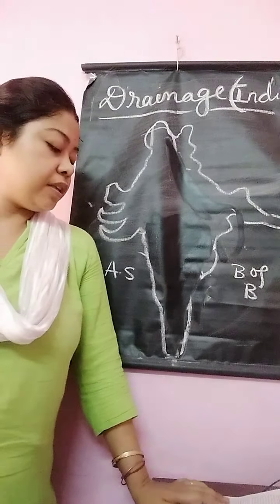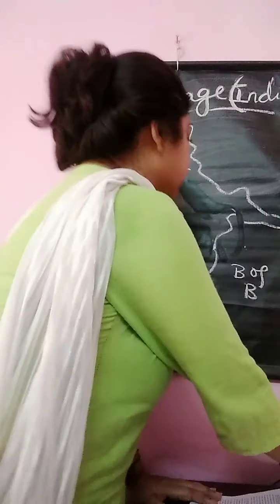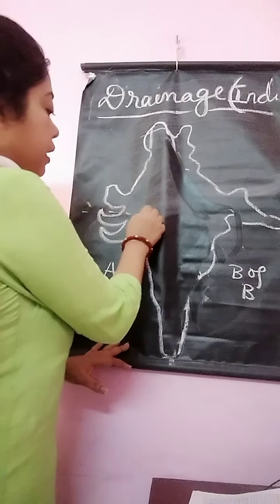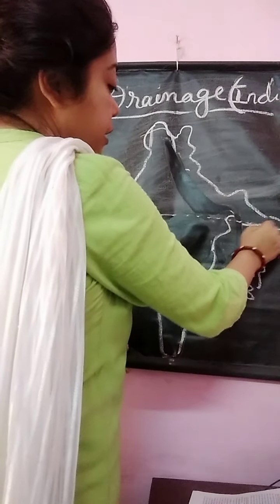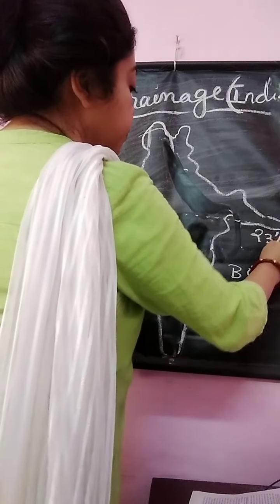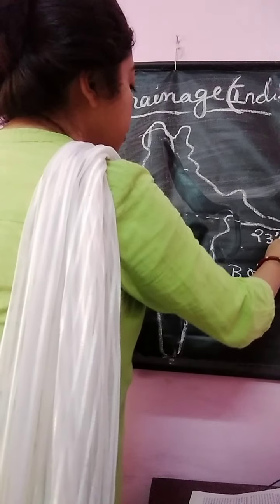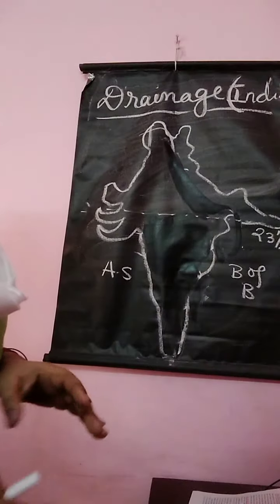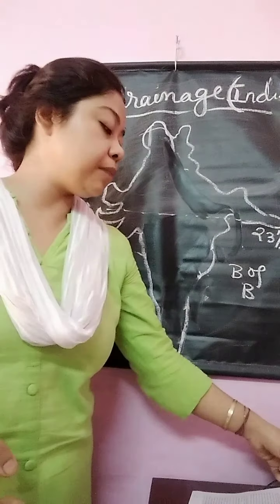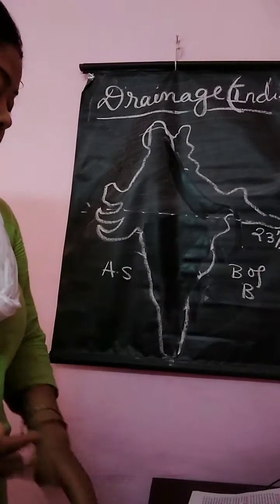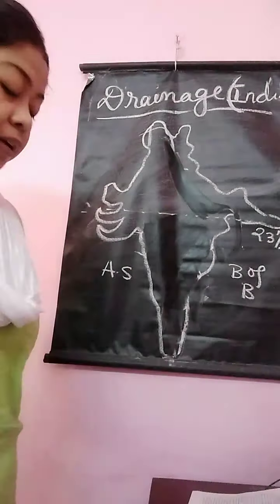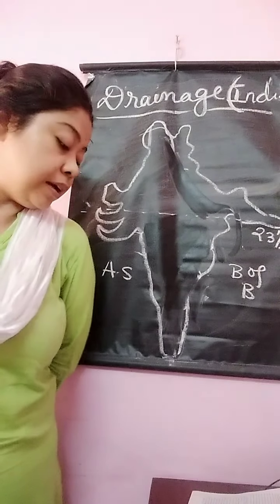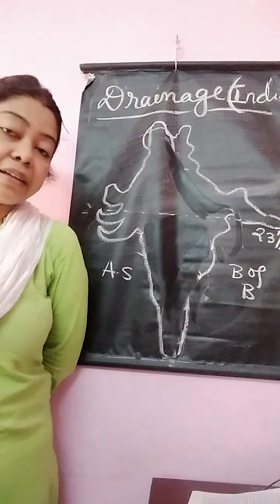There are certain factors which influence the climate of our country. The first factor is location and latitude. Our country extends from 6 degrees north in the south to 37 degrees north in the north. The northern part experiences temperate climate and the southern part experiences tropical climate.